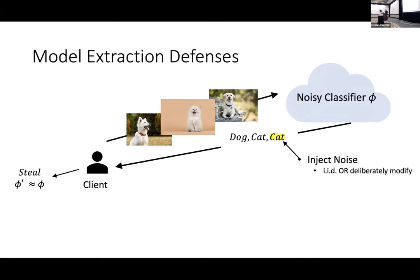How could you defend against model extraction? One thing you might try is to limit the amount of information revealed per query — you could do this by injecting noise, either IID per query or by deliberately modifying the underlying model. This necessarily sacrifices accuracy, so for many types of applications it might not be satisfactory — for example, medical diagnosis.